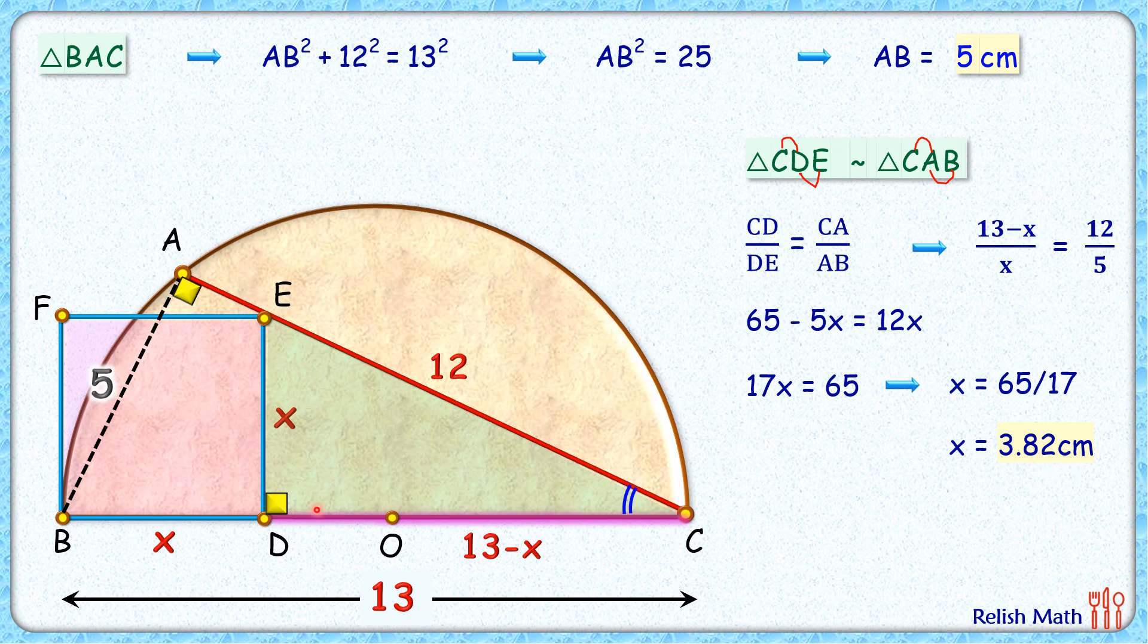And the area of square which we had to find is nothing but x² or 3.82² or 14.62 cm². And that's my answer. I hope you enjoyed the solution. I will see you in the next video. Till then, tata bye bye.